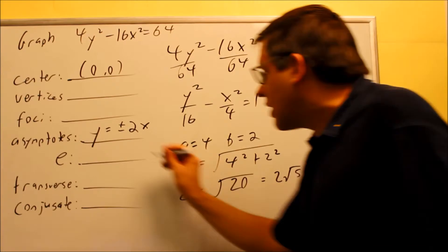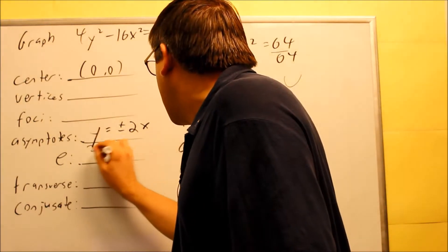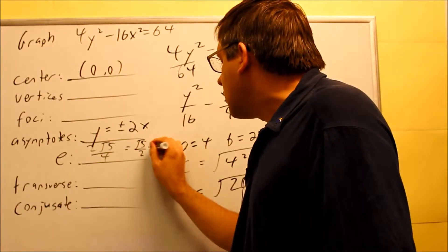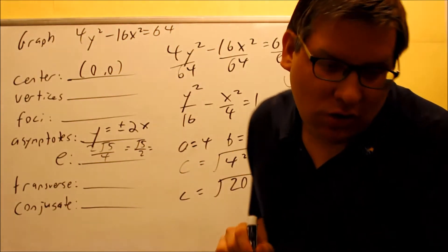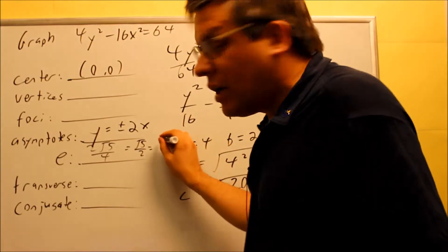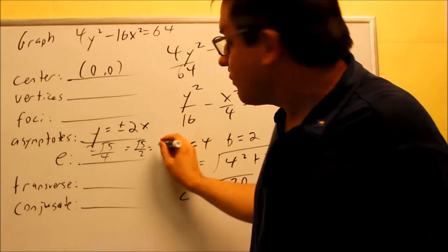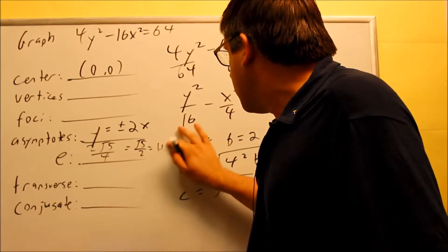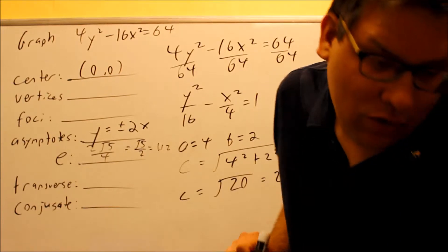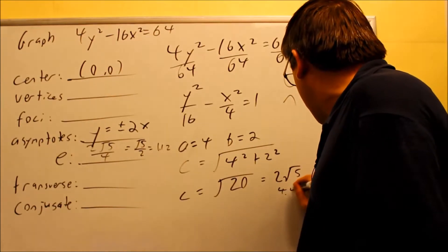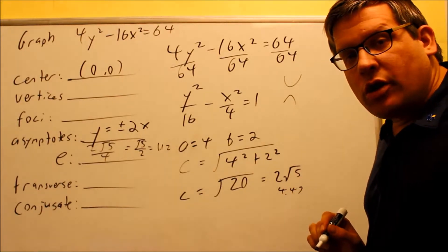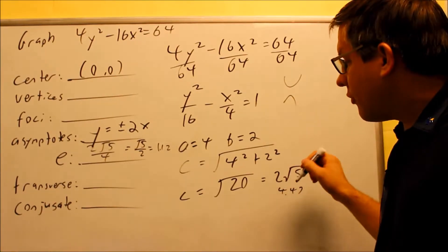Eccentricity is c over a, that's 2 square root of 5 over 4, or root 5 over 2. If you want to do a decimal comparison to look at that, then it's going to be 1.12 we have for that one. So 1.12, still going to be a little bit narrow one. And we also have that this is 4.47 for 2 square root of 5, so we'll use that later when we draw it to get our foci.